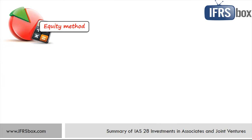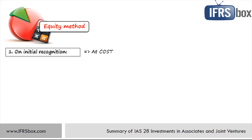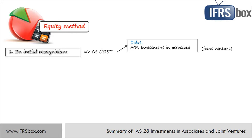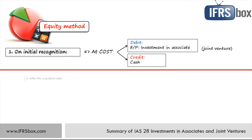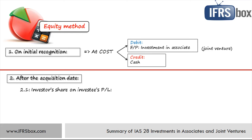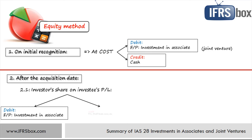Now let's look at what the equity method is all about. The basic principle is that at the acquisition date, or on initial recognition, the investor recognizes its investment in an associate or joint venture at cost — debiting investment in associate in the statement of financial position and crediting cash, bank account, or some liability, whatever applies. After the acquisition date, at the end of each reporting period, the investor increases or decreases the carrying amount of its investment by its share of the associate's profit or loss. So the entry is to debit investment in associate and credit profit from associate in profit or loss. When the associate makes a loss, the investor debits P&L and credits the investment.